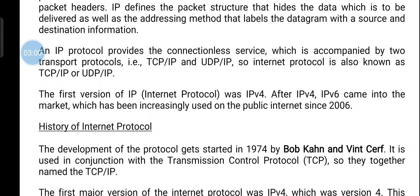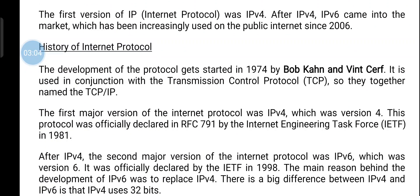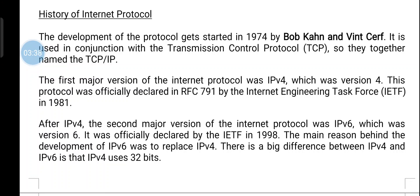The history of Internet Protocol: the development of the protocol started in 1974 by Bob Kahn and Vint Cerf. It is used in conjunction with the Transmission Control Protocol, so they took the name TCP/IP. The first use of the Internet Protocol was IP version 4, which was officially declared in RFC 791 by the Internet Engineering Task Force in 1981.